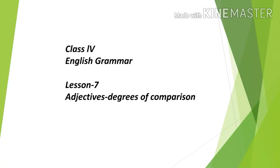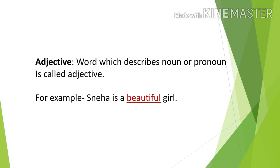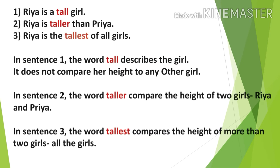Hello everyone. Today in this video lecture we will go through adjectives degrees of comparison. Before we go through degrees of comparison, let's understand in a short way what an adjective is. An adjective is a word which describes a noun or pronoun — it is a kind of describing word. For example, 'Sneha is a beautiful girl.' Here 'beautiful' is highlighted because it is describing the word Sneha, and Sneha is a noun.